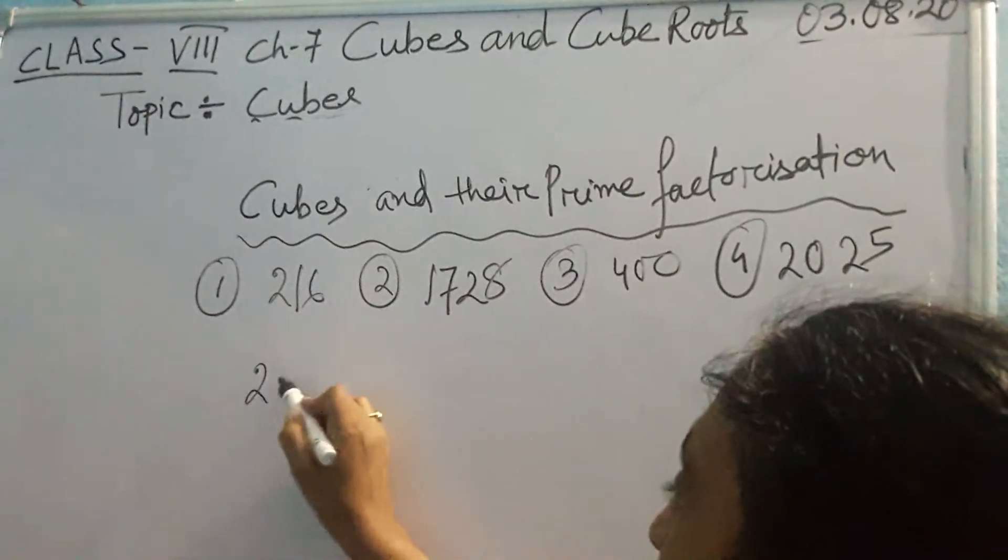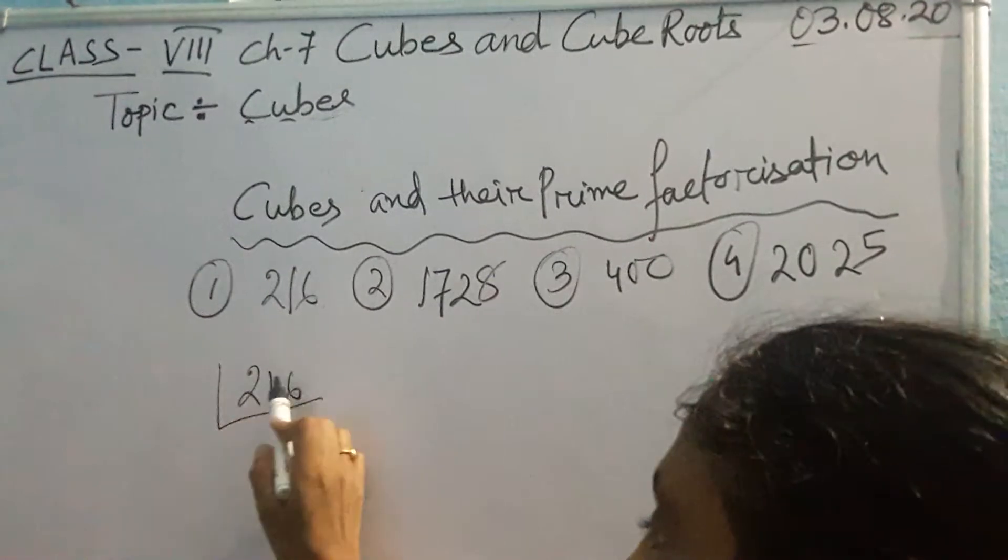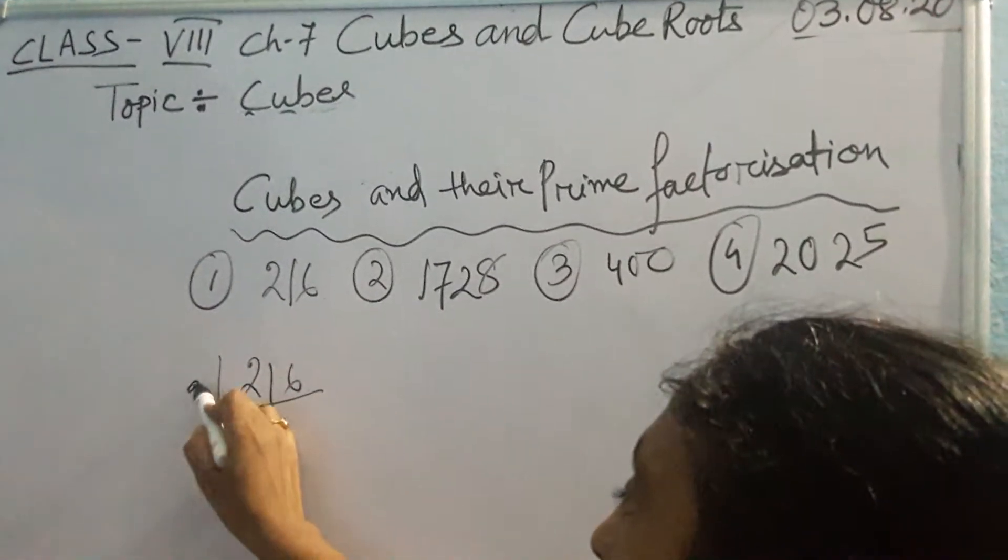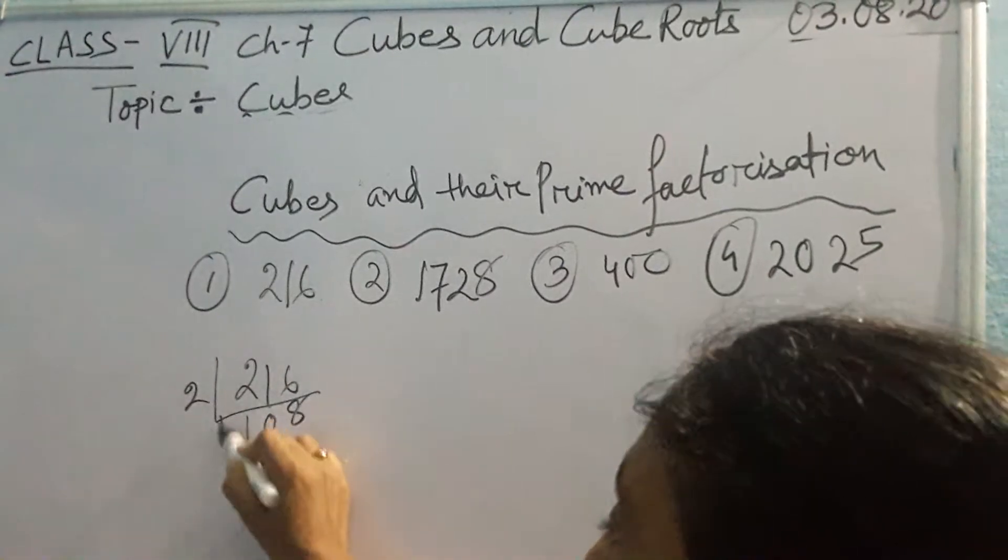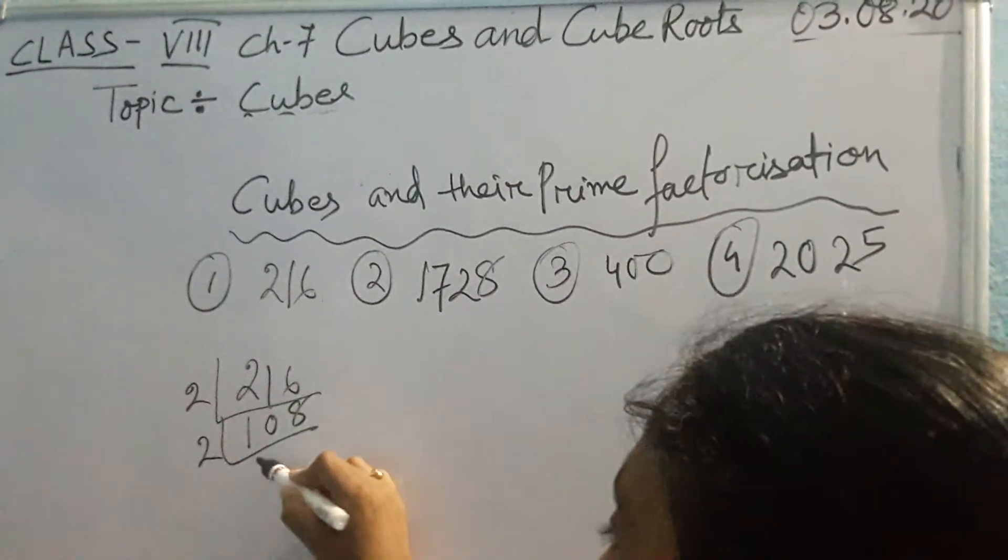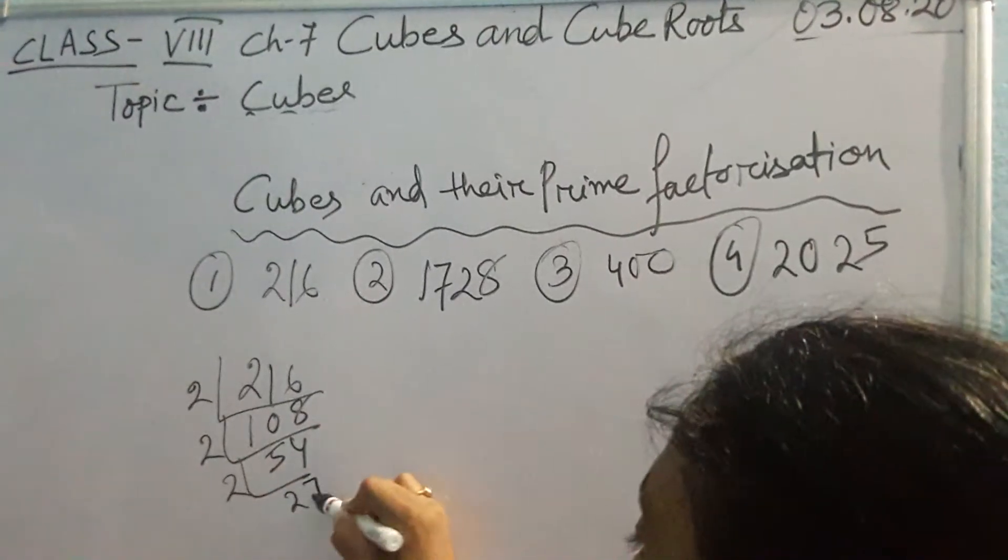Let's start with 216. It is an even number, so let's start factorizing with 2. By 2 what are we getting? 2, 1, 0, 2, then 0, then 8. Again it will be divisible by 2. I am getting 54. Again by 2 what I will get? 27.